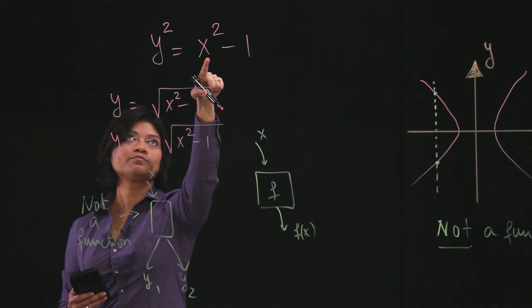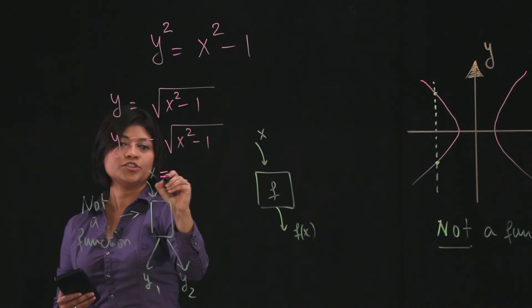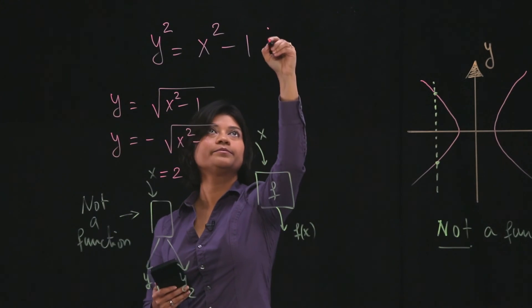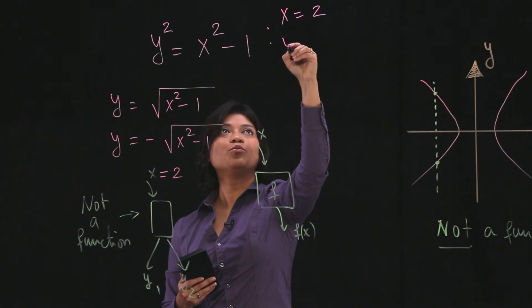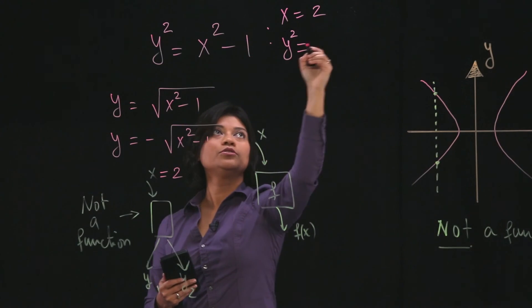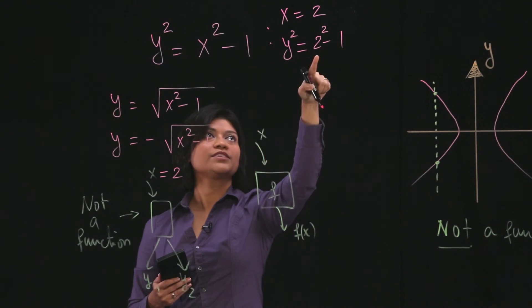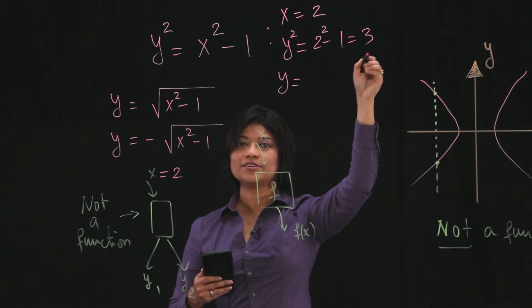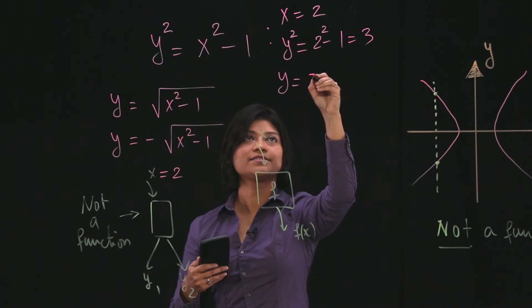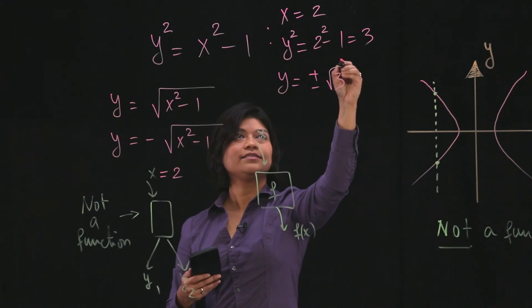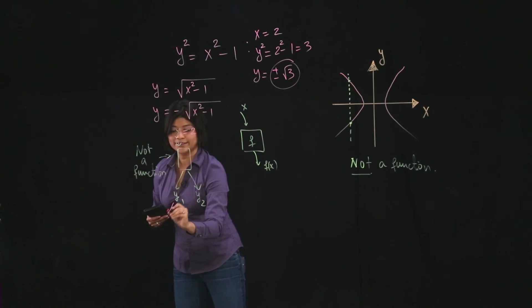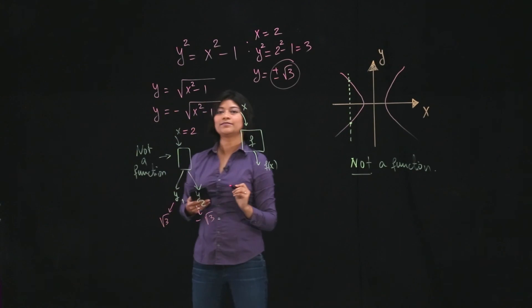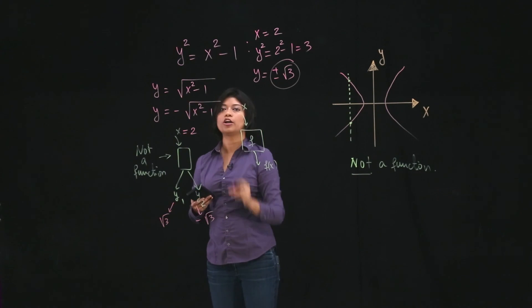Let's see if you plug in, how about 2? So you plug in x equals 2. So what do you get? So let's do it here. If x is 2, then we get y squared is equal to 2 squared minus 1. So that's 4 minus 1 is 3. So y is, you have to take square root, right? So you have to do plus or minus square root of 3. Look at that. You get two different values, right? One, you get square root of 3. And another one, negative square root of 3. And that also tells you that this is not a function.